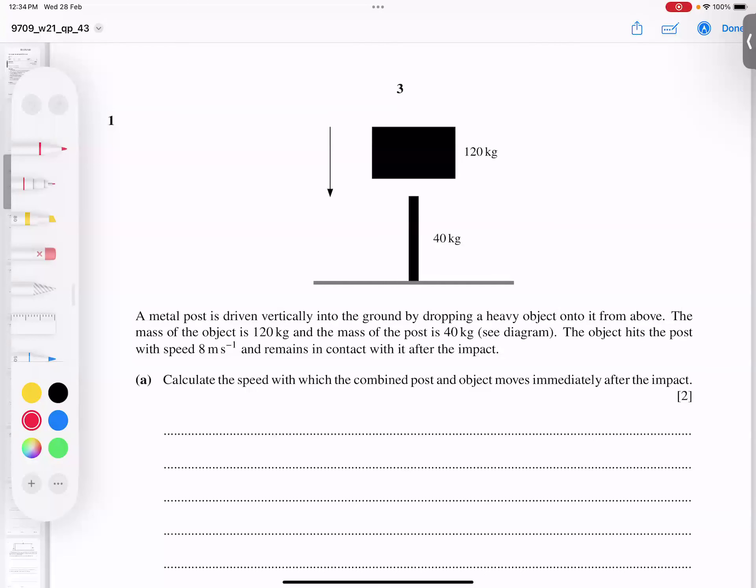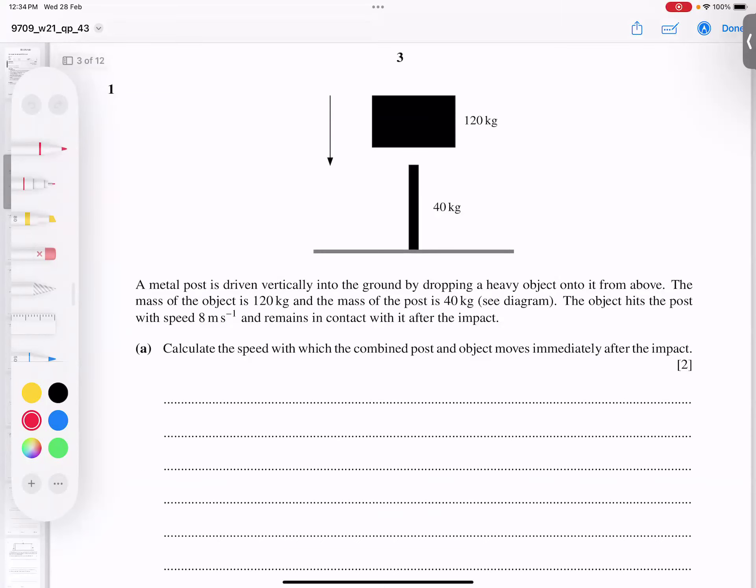Bismillah ar-Rahman ar-Rahim. This is October 2021, variant 43, question number one. The topic is linear momentum. The question is, the metal post is driven vertically into the ground by dropping a heavy object onto it from above. This object is going to hit the post and the post will go inside, will insert inside the ground.